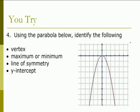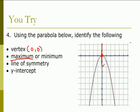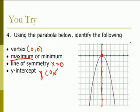Using the parabola below, identify the vertex, the maximum or minimum, the line of symmetry, and the y-intercept. The vertex is right here, and you identify it as an (x, y) point — so it's (0, 0). Because it's the highest point, it is a maximum. The line of symmetry drawn through the vertex is x equals 0. And the y-intercept, which is touching at the vertex, is also (0, 0).